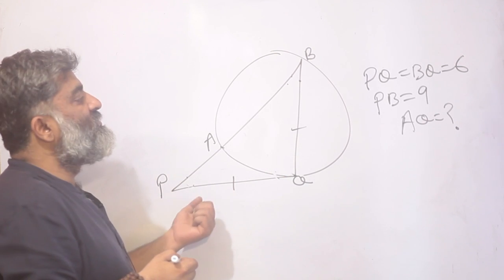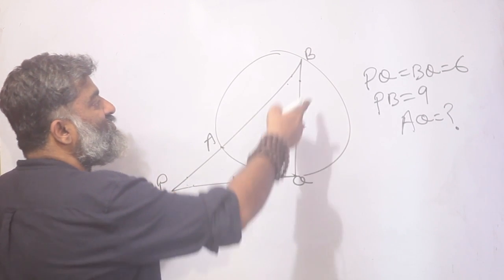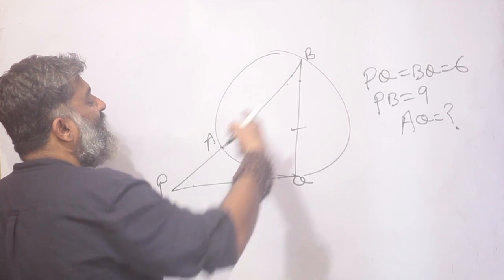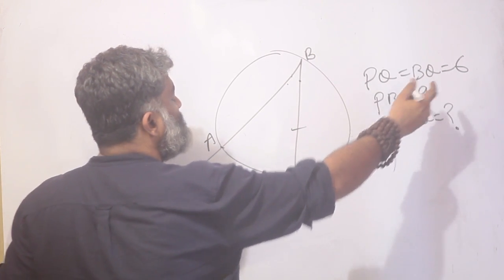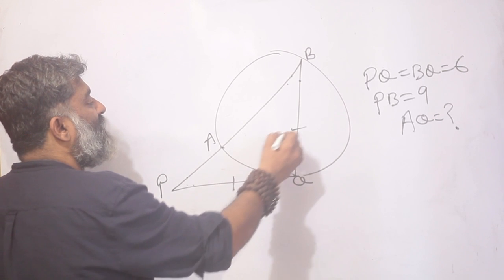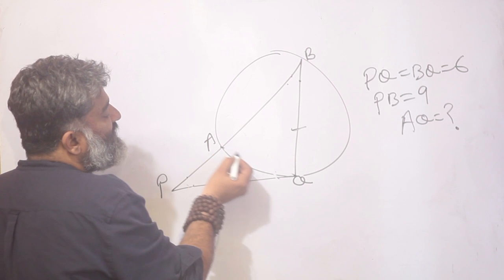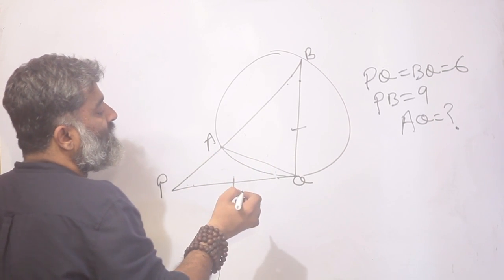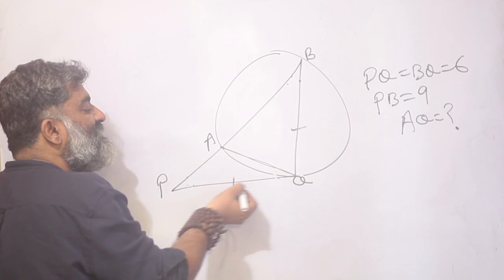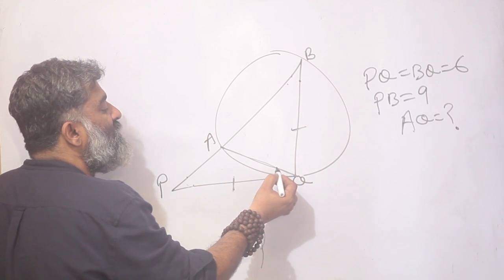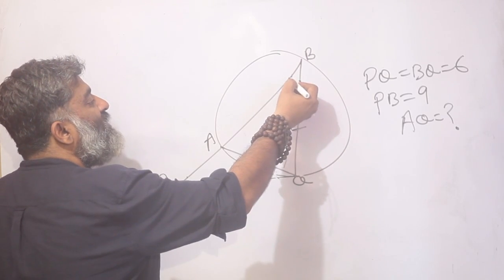The next question: PQ is tangent to the circle, PAB is a secant intersecting the circle at A and B, and it is given that PQ equals BQ equals 6. The question is: what is the value of AQ? When I draw AQ, the tangent-secant theorem is in action again — this is a tangent and this is a chord inside the circle. The angle created by the tangent and chord will be mirrored in the alternate segment, so angle PQA equals the inscribed angle in the alternate segment.